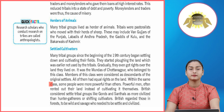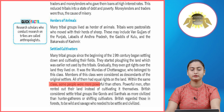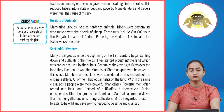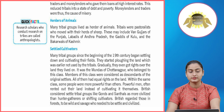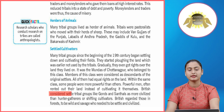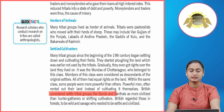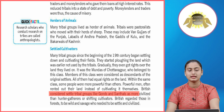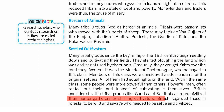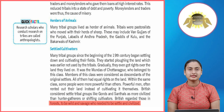Within the same class, some people were more powerful than others, and powerful men often rented out their land instead of cultivating it themselves. The British considered settled tribal groups like the Gonds and Santhals as more civilized than hunter-gatherers or shifting cultivators. The British regarded those in forests to be wild and savage, who needed to be settled and civilized.